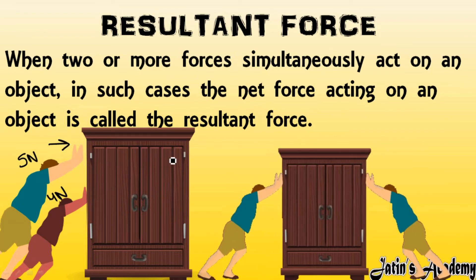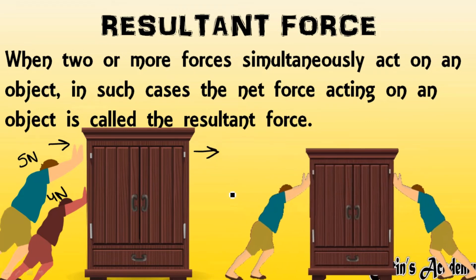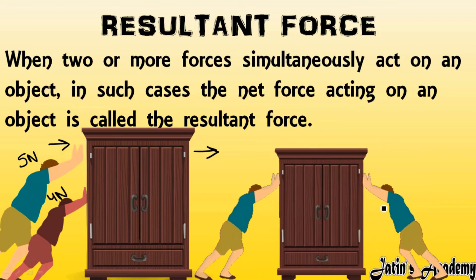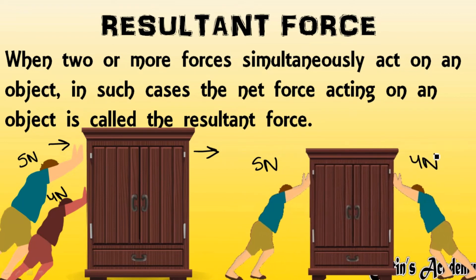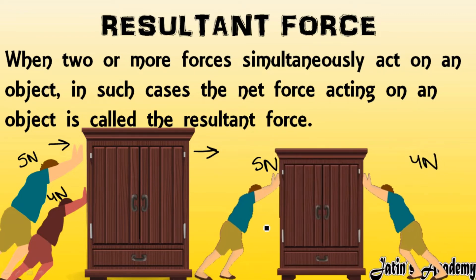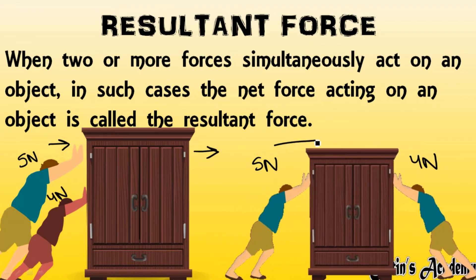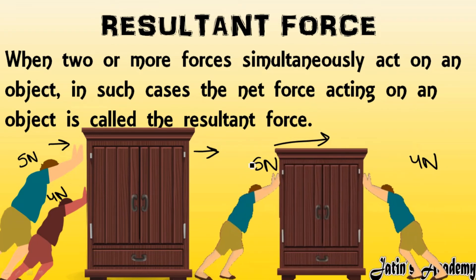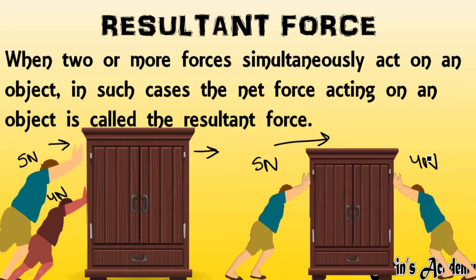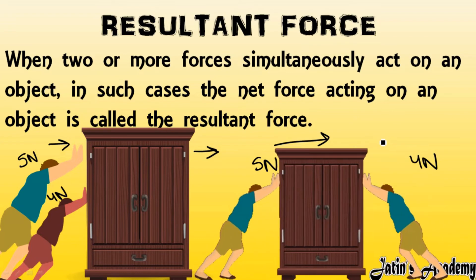When both apply force in the same direction, the almirah moves in that direction. When they apply from opposite directions — one with 5 newtons and the other with 4 newtons — the almirah moves toward the side with greater force, which is 5 newtons, because 4 newtons is not enough to move the almirah the other way. The object always moves toward the side where greater force is applied.